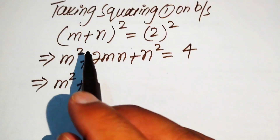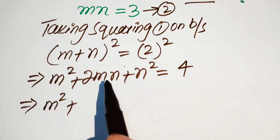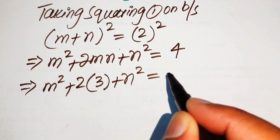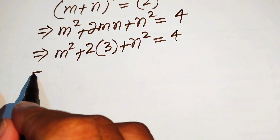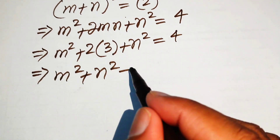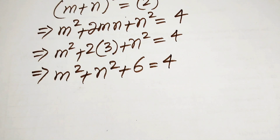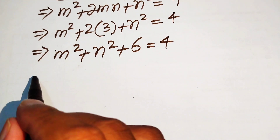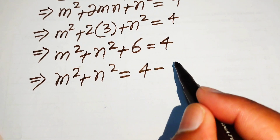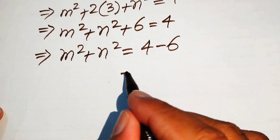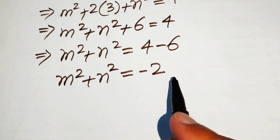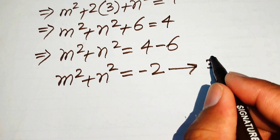From equation number 2 we have the value of mn equals 3. We use this value here and it is written as m squared plus 2 times 3 plus n squared equals 4, which gives m squared plus n squared plus 6 equals 4. Moving plus 6 to the right hand side: m squared plus n squared equals 4 minus 6, which equals minus 2. We call this equation number 3.